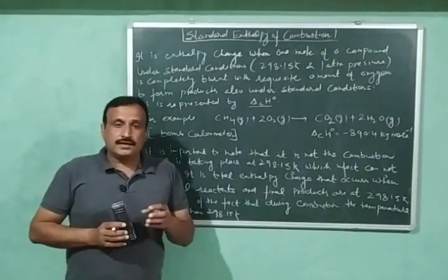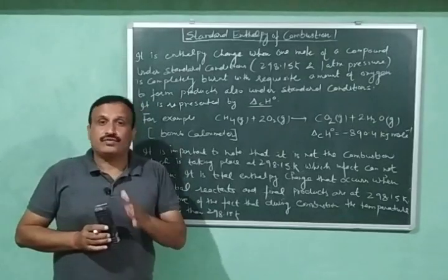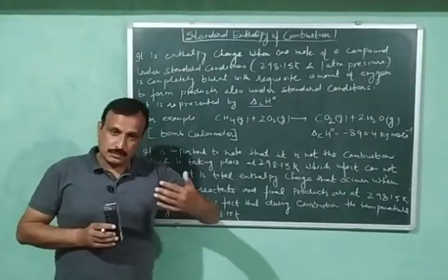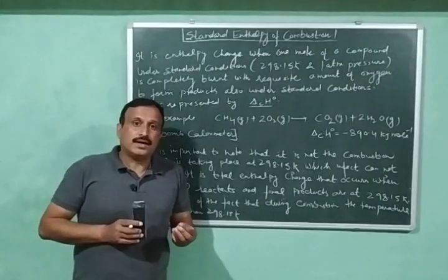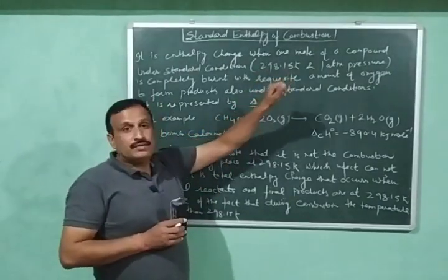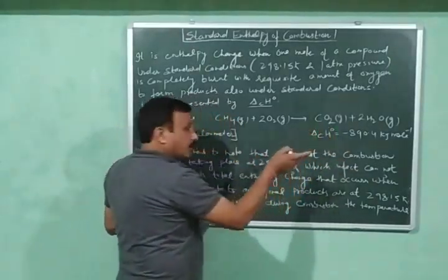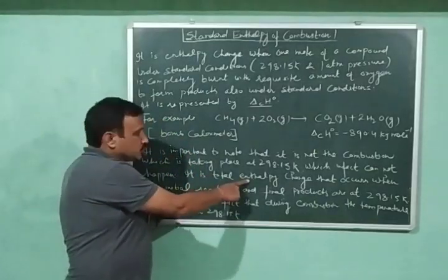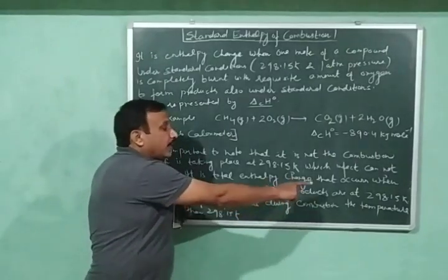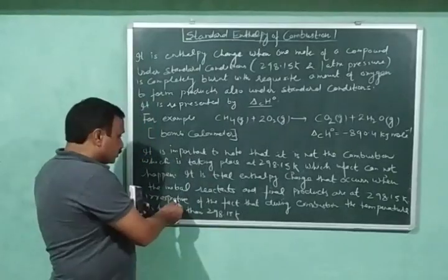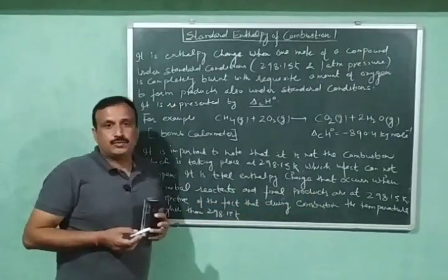It is important to note here that it is not the combustion which is taking place at 298.15 Kelvin, because during the combustion process the temperature will be higher than 298.15 Kelvin. What we mean by 298.15 Kelvin here is that the standard enthalpy of combustion is the total enthalpy change that occurs when the initial reactants and final products are at 298.15 Kelvin, irrespective of the fact that during combustion the temperature is higher than 298.15 Kelvin.